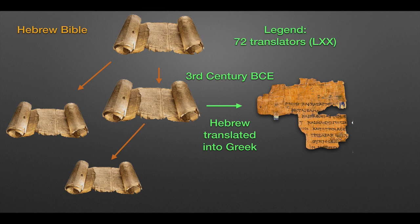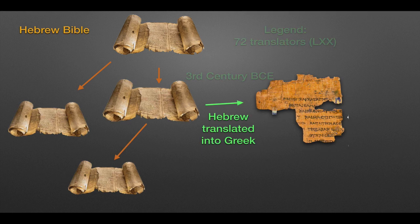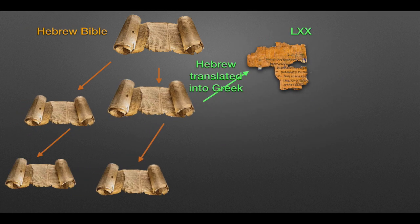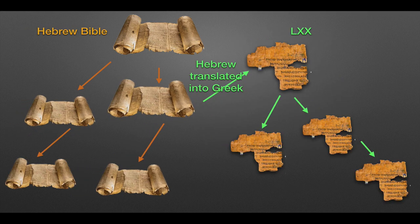So we now have Hebrew copies being made and Greek copies being made simultaneously. What kind of care was shown with the Greek copies? Now we need to introduce a bit of complexity to the story. We need to say a bit about Hebrew, the Hebrew language.